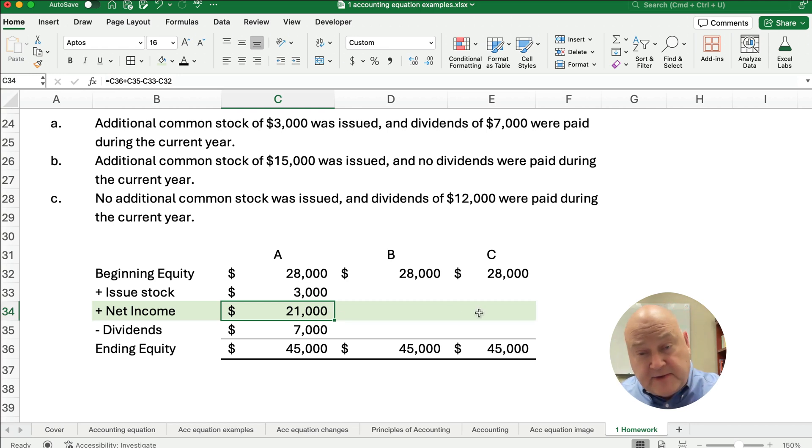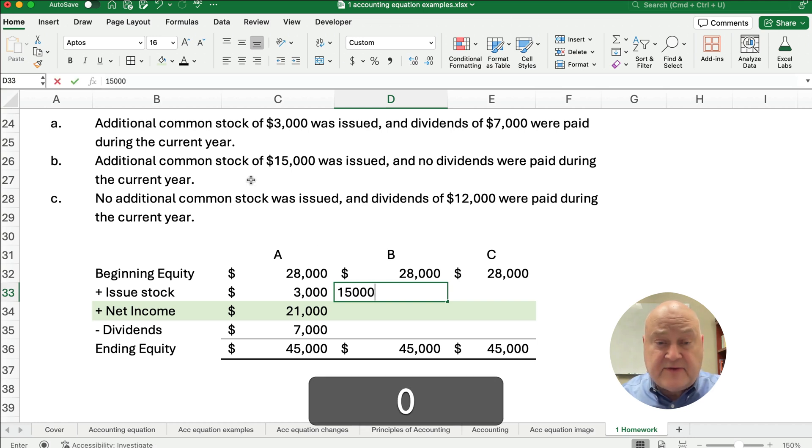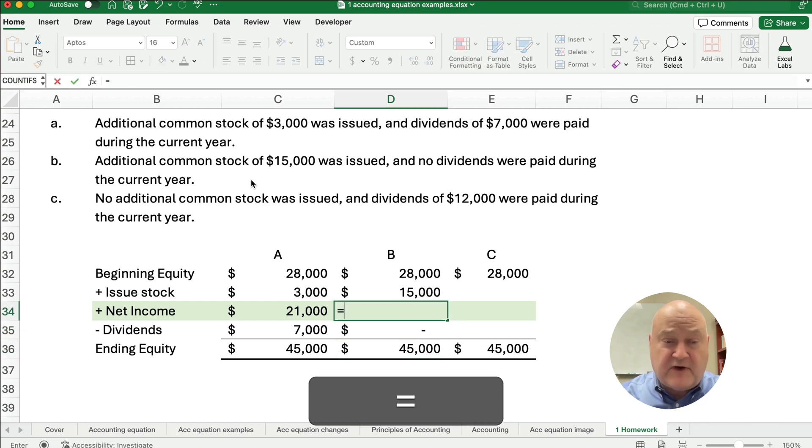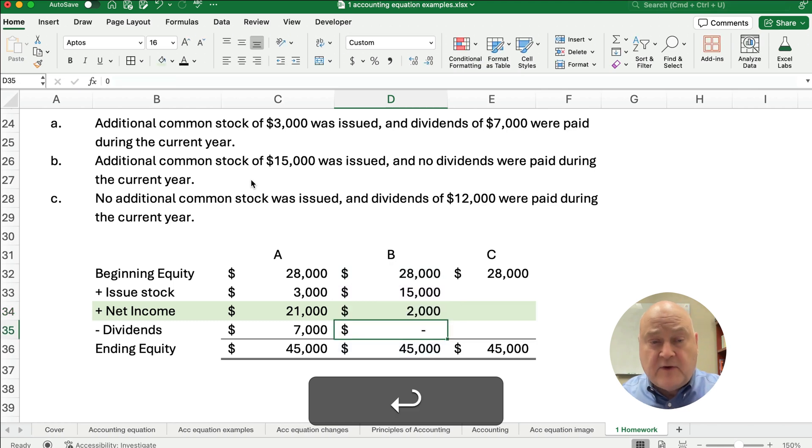So let me do it one more and then I'll be able to copy it over to scenario C. Item B now, we have common stock of 15,000 was issued and zero dividends. So how do we calculate net income? Well, we're going to reverse it to try to get net income. So 45 plus the dividends minus the issuing the stock minus the 28,000. So what we have is net income must be 2,000. Let's check our work. 28 plus 15 plus 2, does that equal 45? You know, minus zero here. Does it equal 45? Yes, it does.